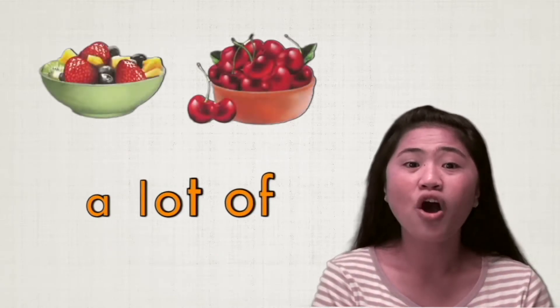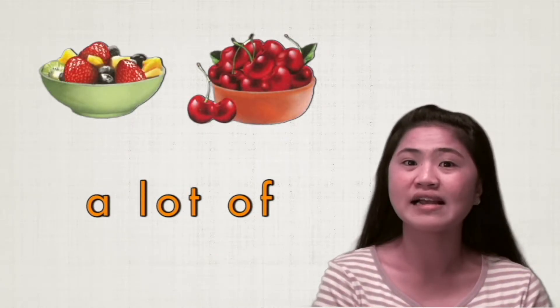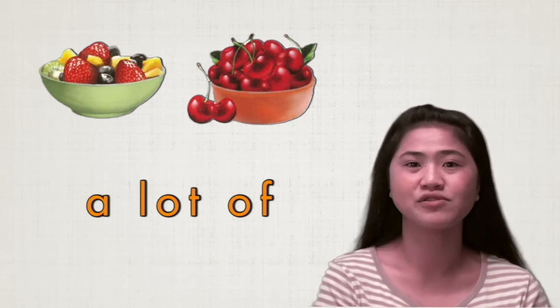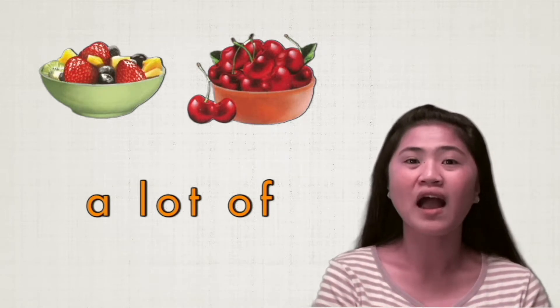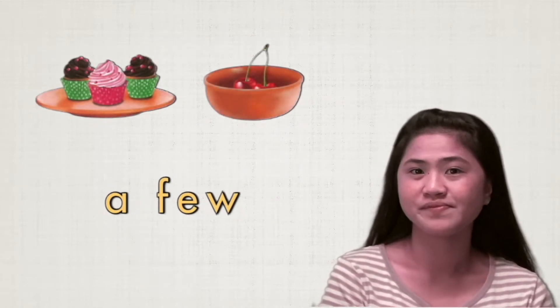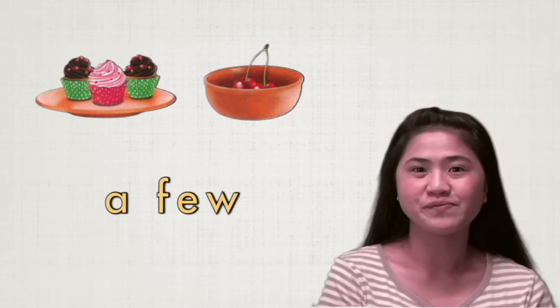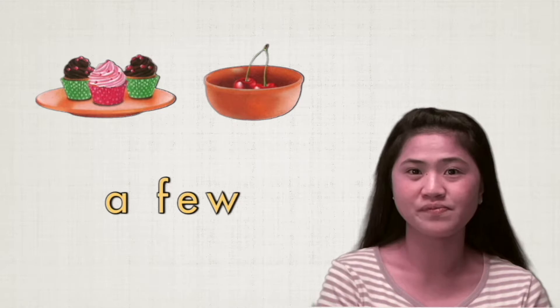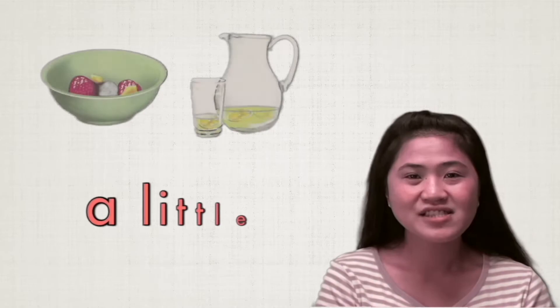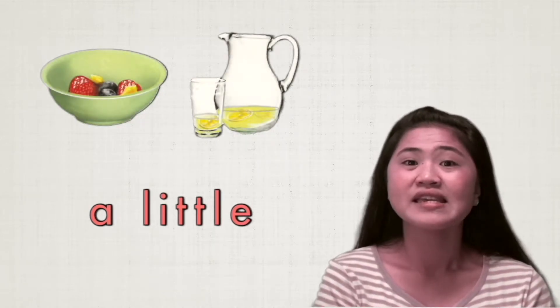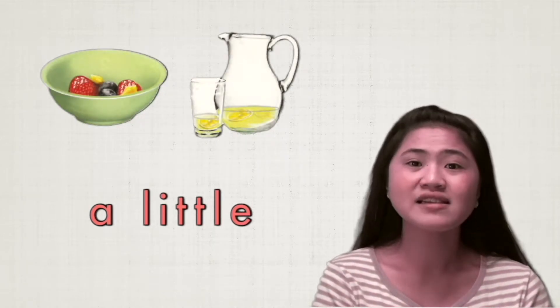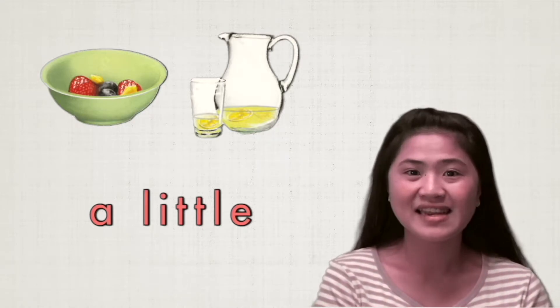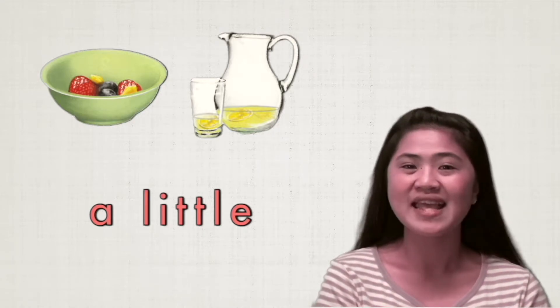'A lot of' — it can be used for a countable and uncountable noun. Next, 'a few' — it can be used for a countable noun. Next, 'a little' — it can be used for an uncountable noun.